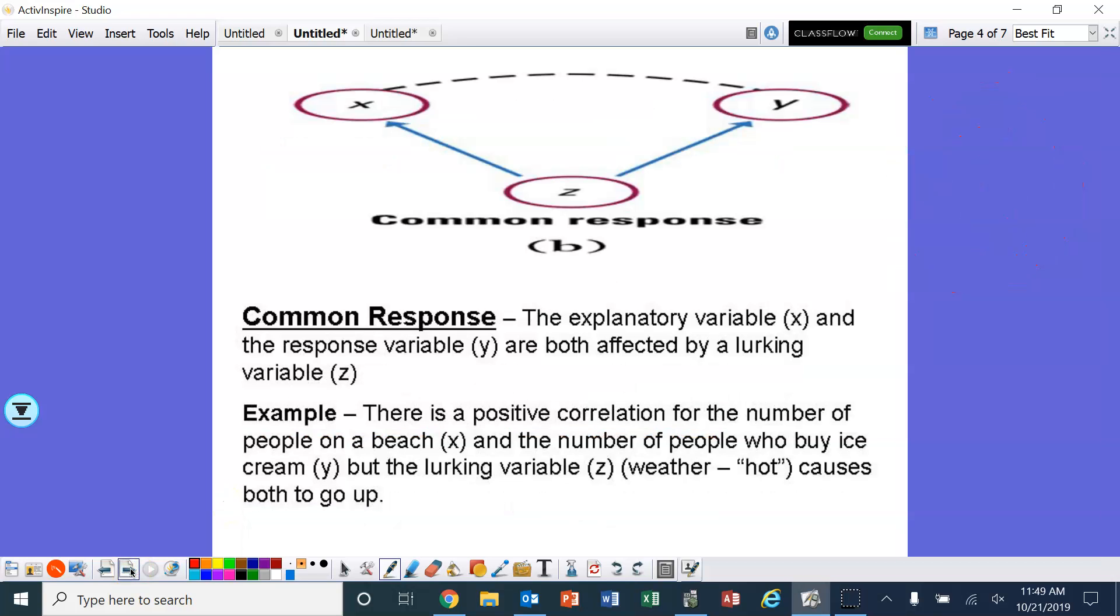What else is there? Well, there's a common response. That's when the explanatory variable x and the response variable y are both affected by a lurking variable z. So it's kind of getting mixed up. Okay, we don't know if z is affecting the x and the y, or it looks like there's going to be a relationship between x and y. However, there's an outside factor, that lurking variable.